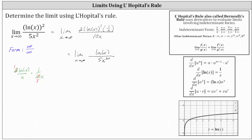Now let's check the form again. Notice as x approaches infinity, natural log x approaches infinity, and so does 5x squared. We still have the indeterminate form of infinity divided by infinity, which indicates we can apply L'Hôpital's rule again. This gives us the limit as x approaches infinity of the derivative of natural log x, which is 1 divided by x, divided by the derivative of 5x squared, which is 10x.